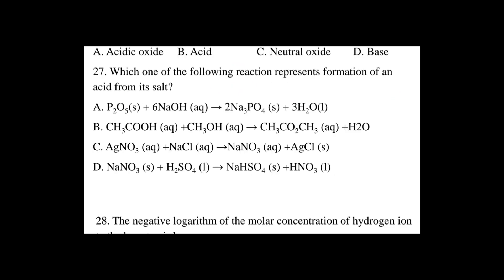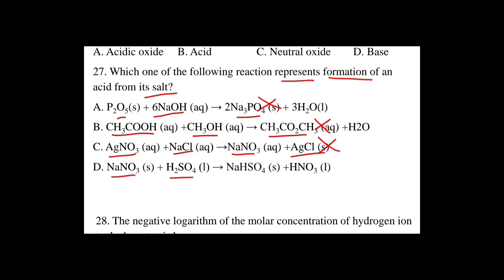Question number 27: Which one of the following reactions represents the formation of an acid from its salt? Option D: sodium nitrate (salt) plus H2SO4 forms sodium hydrogen sulfate plus an acid. This is the preparation of acid from its salt using a non-volatile acid like H2SO4.